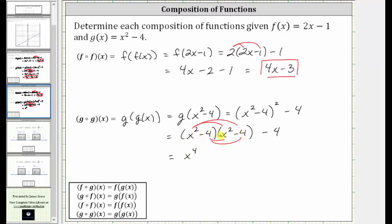The next product is negative 4 times x squared, which is also negative 4x squared. Negative 4x squared plus negative 4x squared is negative 8x squared, which gives us minus 8x squared. And then negative 4 times negative 4 is positive 16, giving us plus 16, and we still have minus 4.